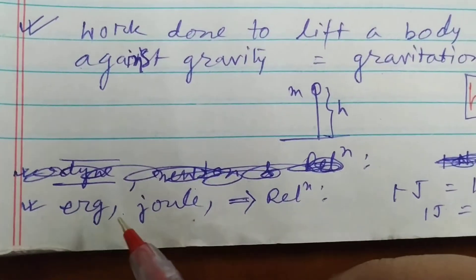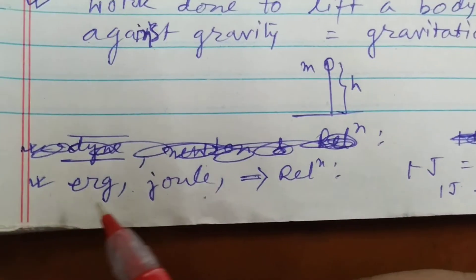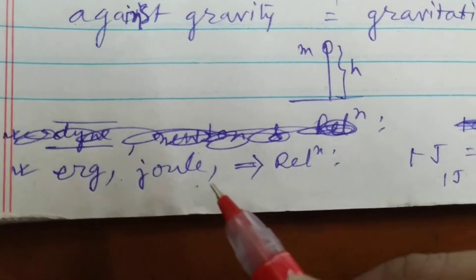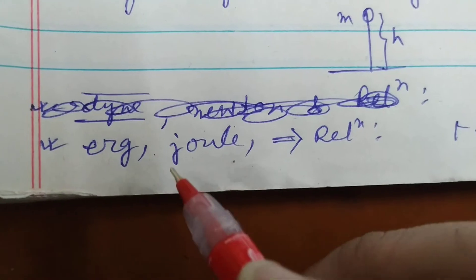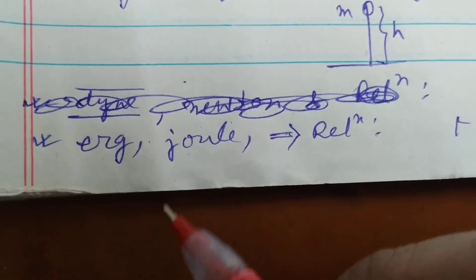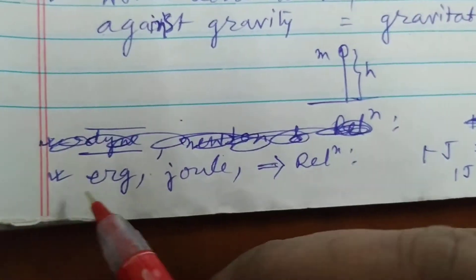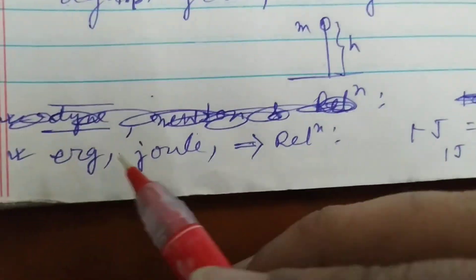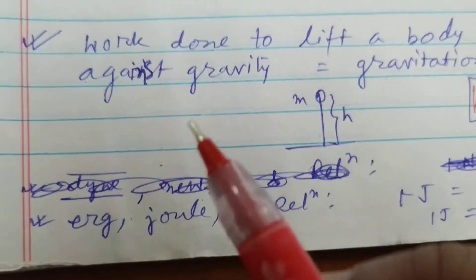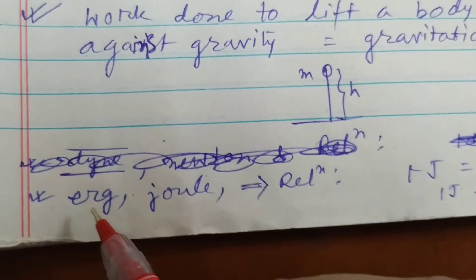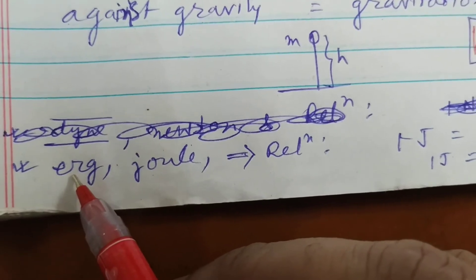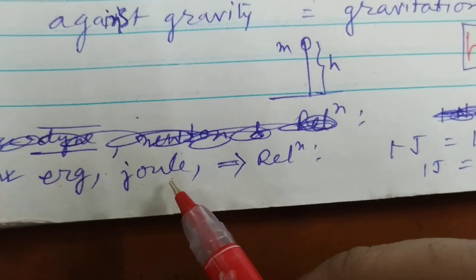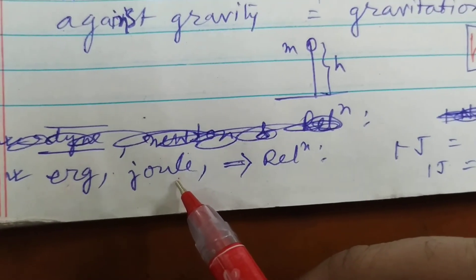Now the units of work. The CGS unit of work is erg, and the SI unit of work is joule — named after the scientist Joule, written with a small j: j-o-u-l-e. One erg is defined as: when one dyne force acts on a body causing a displacement of one centimeter, the work done is one erg. One joule is defined as: when one newton force acts on a body causing a displacement of one meter, the work done is one joule.